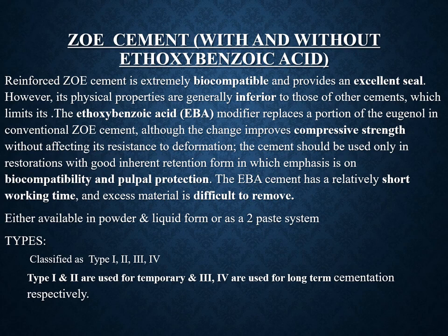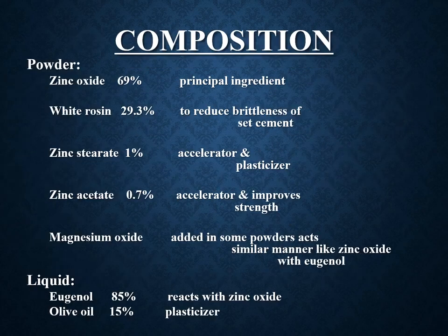EBA cement emphasizes good compatibility and pulp protection. It has a relatively short working time and excess cement is very difficult to remove. It comes in a powder and liquid form or a paste system. The types are classified into type 1, 2, 3, and 4 — types 1 and 2 are used for temporary cementation and types 3 and 4 for long-term cementation.